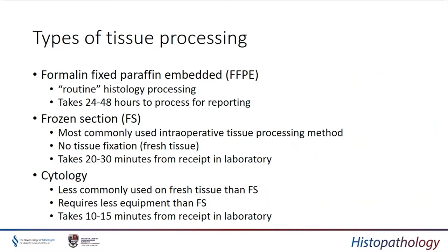Regarding types of tissue processing: FFPE is often referred to as routine histological processing and typically takes 24 to 48 hours from receipt. It takes that time to fix in formalin, typically 24 hours, and then be processed overnight through varying degrees of alcohol strength, then embedded in paraffin wax, sections cut, stained, and presented for reporting down a microscope.